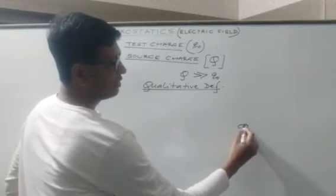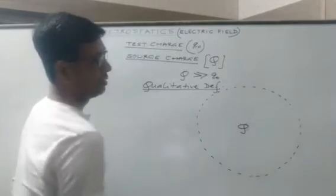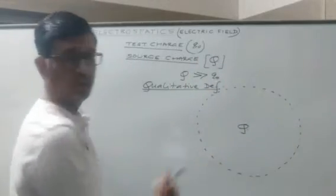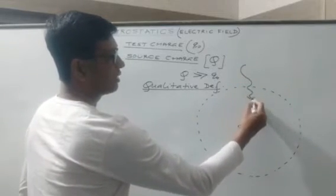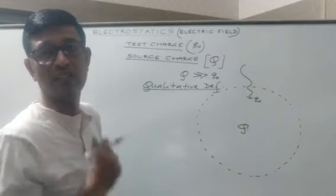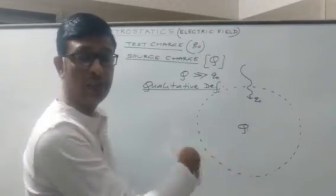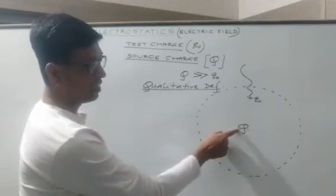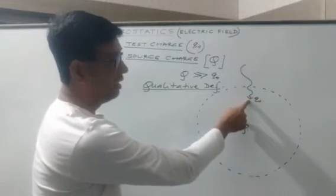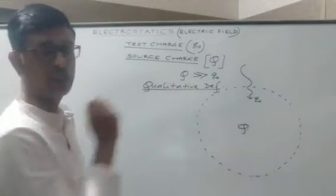Suppose there is a source charge. What it does is it modifies its surroundings — its effect is spread symmetrically in all directions, and this is its sphere of influence. Whenever any charge is brought into its surroundings, that charge, under the influence of the electric field due to the source charge, will experience some electric force. So qualitatively, the electric field due to a source charge may be defined as the space property by virtue of which the source charge modifies its surroundings such that any charge brought near its vicinity tends to experience an electric force of attraction or repulsion, depending upon the nature of the pair of charges.